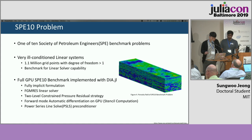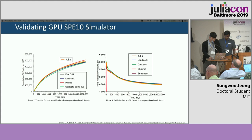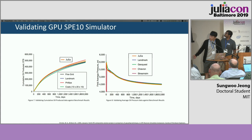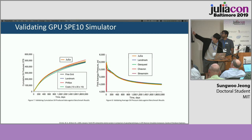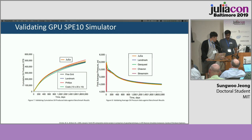All these implementations also built on DIA.jl. To validate that we're solving the right thing, we solved SPE10 and compared our results against other companies' results. As you can see, the orange line is the Julia result, which pretty much agrees with the other results. And that was our reservoir simulator.